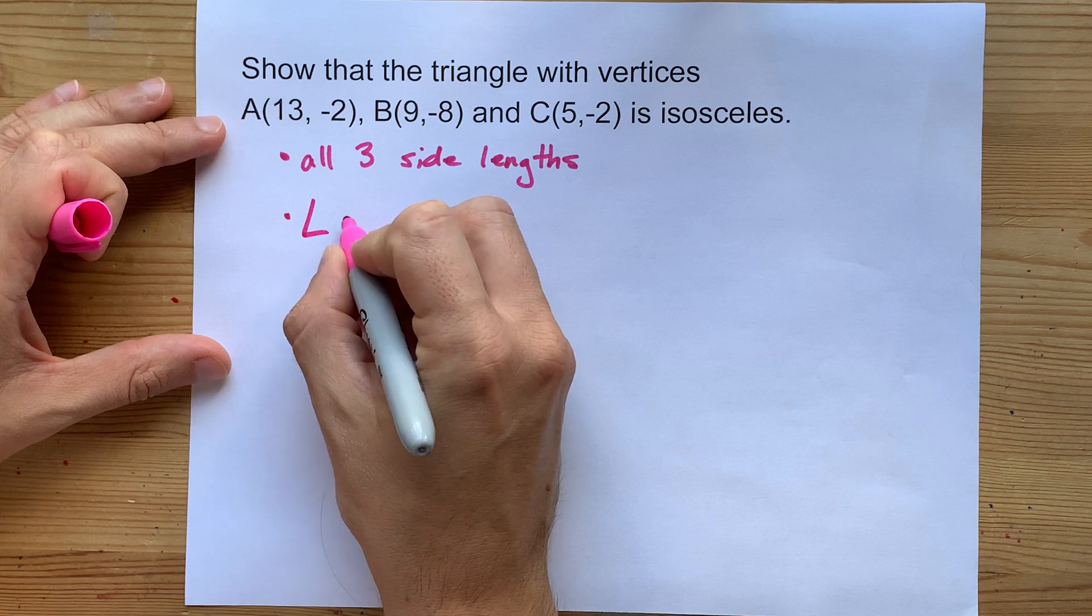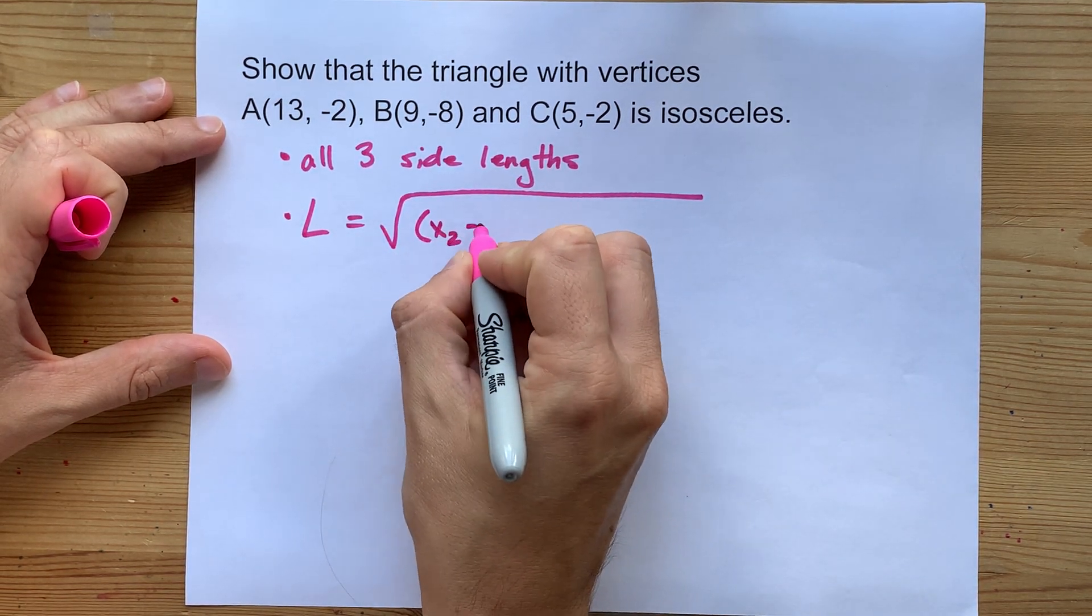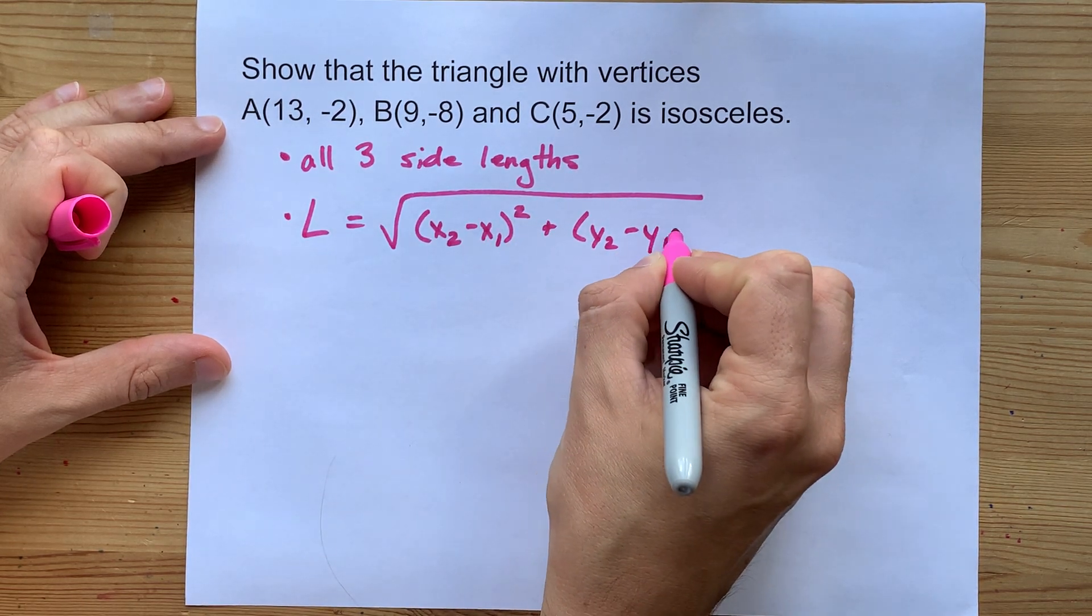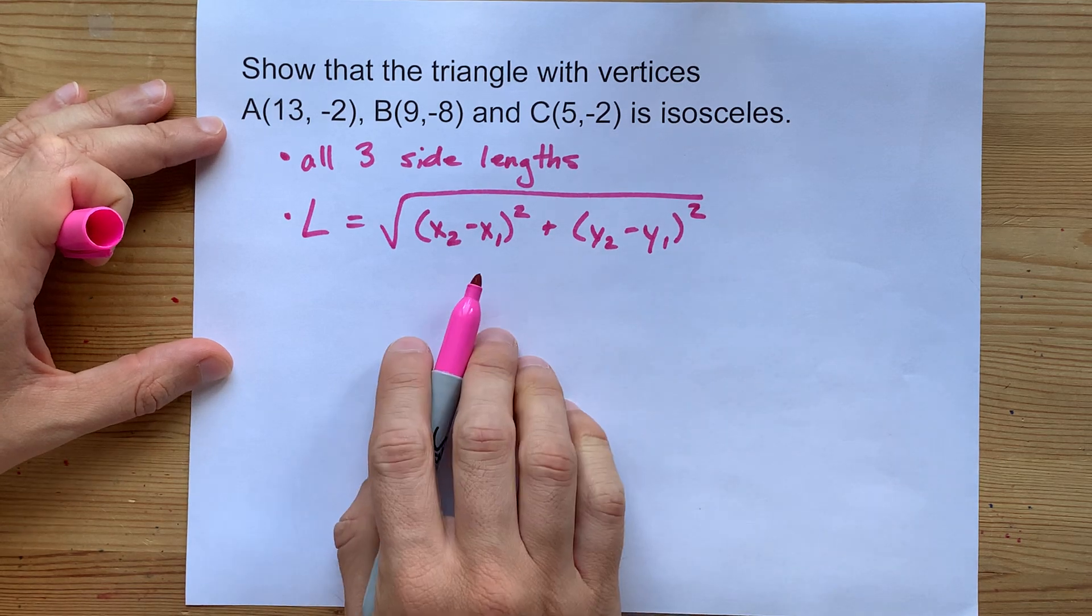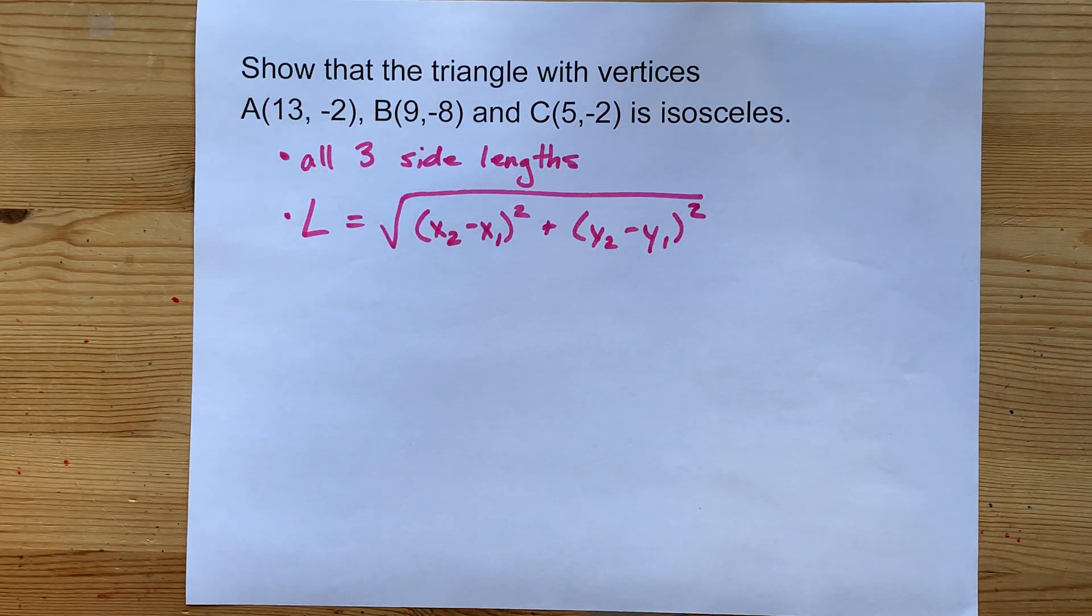Remember, the length formula is the square root of (x2 - x1) squared plus (y2 - y1) squared. Luckily for us, we've been given xy coordinates for all three of the corners of the triangle.